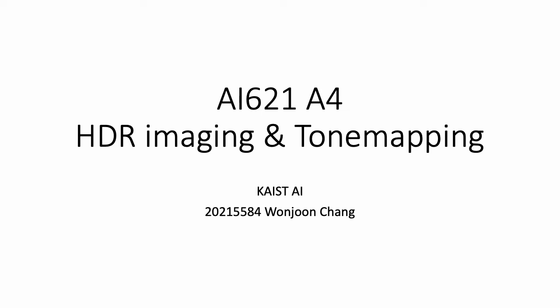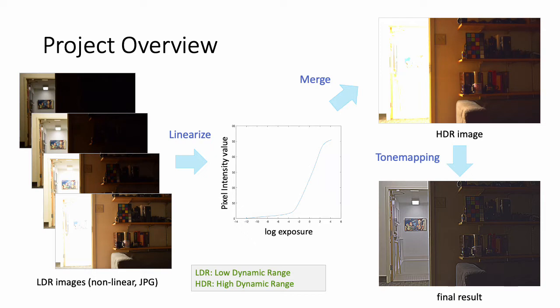Hello, in this video I'll introduce the HDR imaging process and tone mapping. General JPG images captured by camera have two properties: they are non-linear to the actual radiance and they have low dynamic range so that it cannot capture the entire range of radiance in the real world.